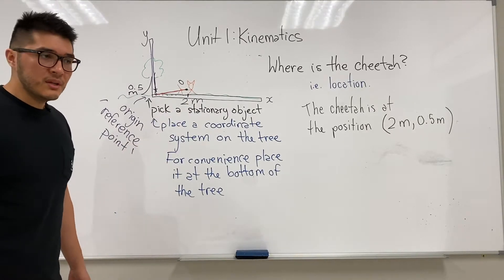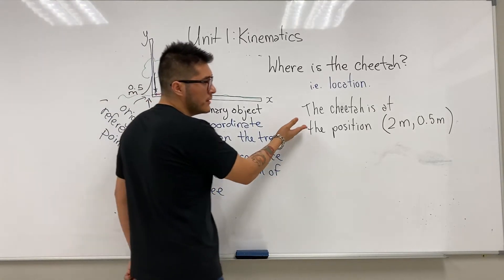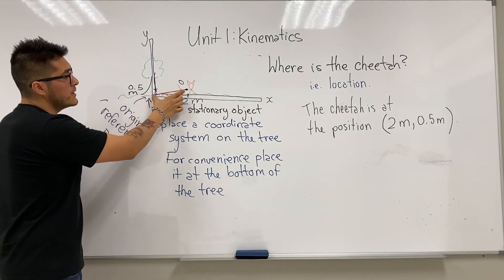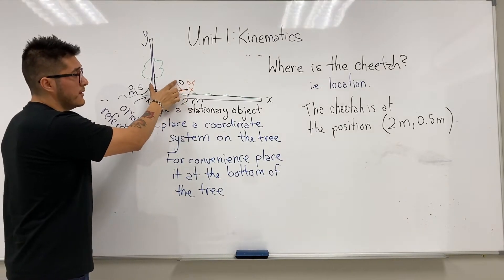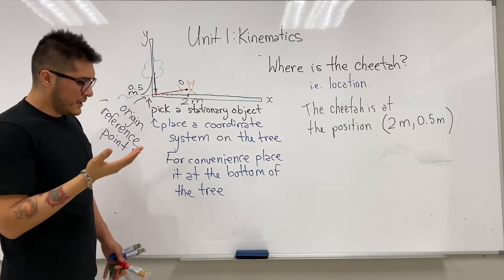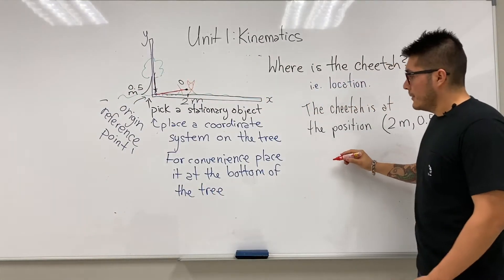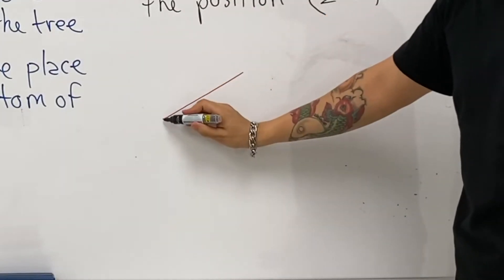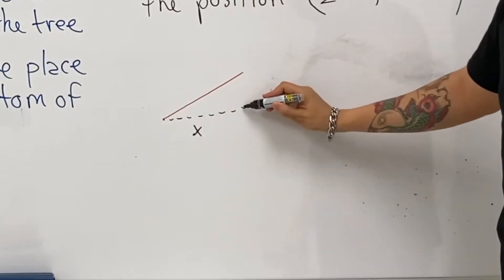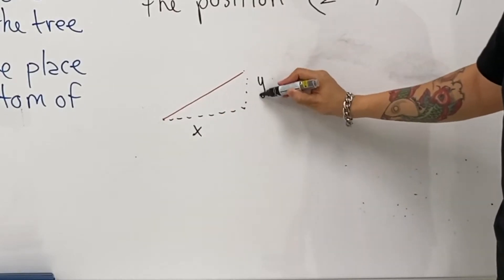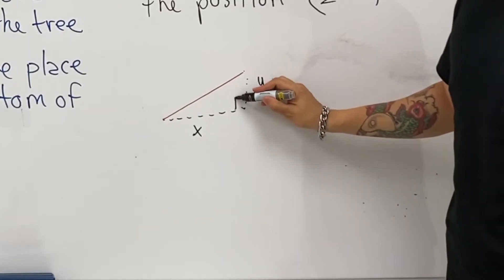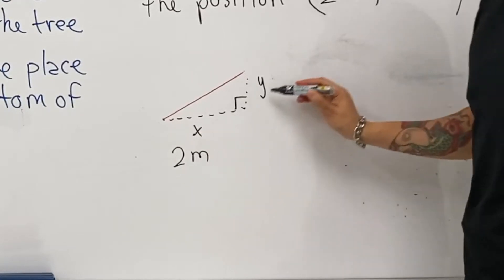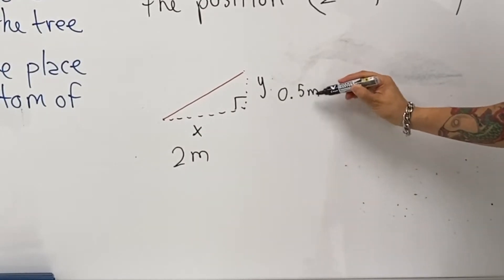When talking about where the cheetah is, one way to do it is to place a coordinate system. You place the coordinate system and measure where the object is in that frame. We have the distance, then the x-part of it, the y-part, and since it is a coordinate system this is going to be right-angled. Putting in the numbers: it shows two meters and 0.5 meters.